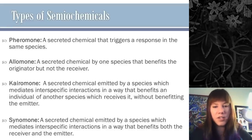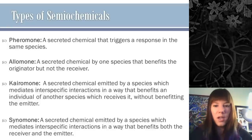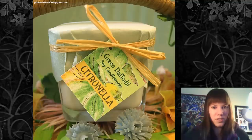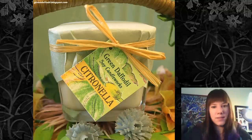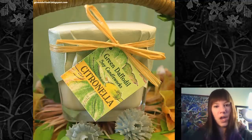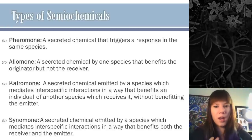An allomone is a chemical secreted by one organism that benefits the emitter but is not beneficial to the receiver — for example, a plant releasing a toxin or repellent that drives away insects. Citronella candles use plant oil to keep mosquitoes away — beneficial for the plant and for us, detrimental for the insect. A kairomone is a chemical where the emitter does not benefit but the receiver does.